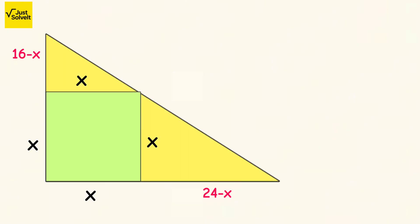Now focus on the two small right-angled triangles formed. They both share the same angle and are right-angled, so they are similar triangles. Because of this, we can write the proportion: 16 minus x divided by x equals x divided by 24 minus x.